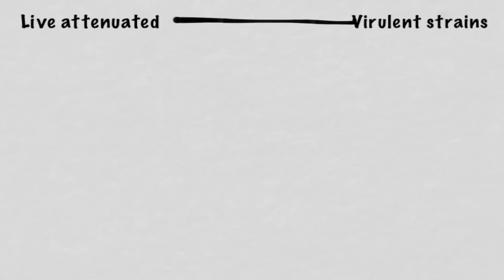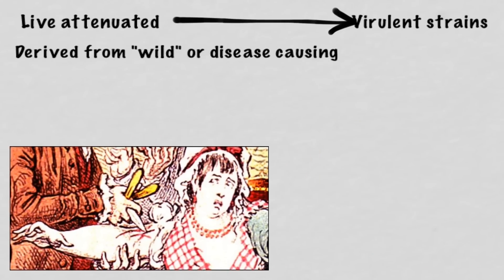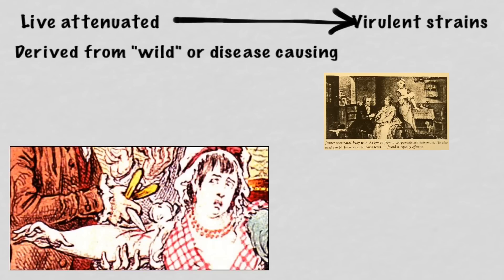Let's first talk about the idea of different virulence or different ability to cause disease in a strain. This concept has actually been around for a really long time. Basically, these live attenuated vaccines are derived from the wild or disease-causing strain of the pathogen. This concept dates back way before Edward Jenner developed the vaccine to smallpox, actually back even further to what were the original pox parties or the concept of variolation.